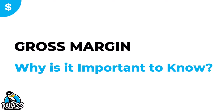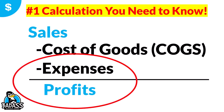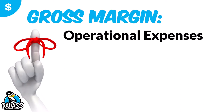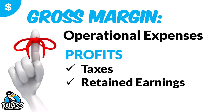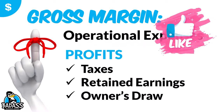Why is this important for you to know? Going back to our calculation of sales minus cost of goods minus expenses: your gross margin is important because it pays for all of the expenses in your business and determines if you're going to have a profitable business. Your profits have to cover three things: taxes, any retained earnings you reinvest back into the business, and your owner's draw. So your gross margin covers all four items: operational expenses, taxes, retained earnings, and owner's draw.